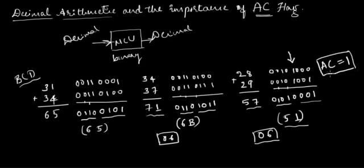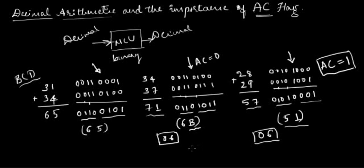This is where the auxiliary carry flag plays its role: whenever the auxiliary carry flag is set to 1, I should add 06 to the result to get the right answer. Coming back to the first example, the auxiliary carry flag is not set, so I need not add anything — the result is correct. In the second example, the auxiliary carry flag is also not set, yet I got the wrong result. The reason is that B is not defined in BCD — there are only ten valid digits in BCD (0 through 9). So whenever the nibble is more than 9, I also have to add 06 to get the right answer.